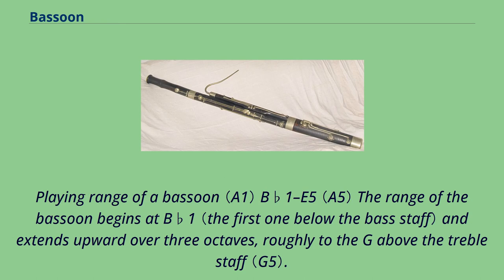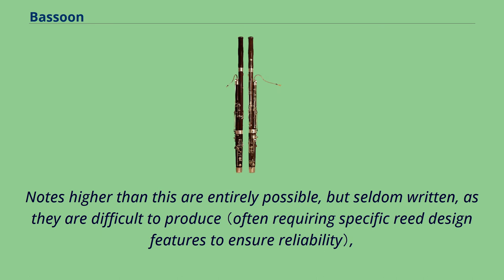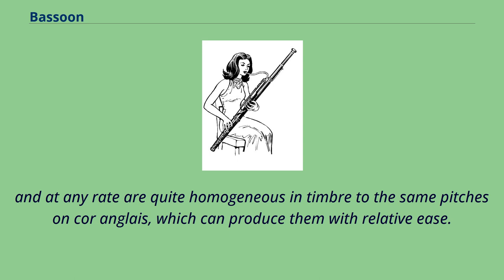The range of the bassoon begins at Bb1 and extends upward over three octaves, roughly to the G above the treble staff. However, most writing for bassoon rarely calls for notes above C5 or D5; even Stravinsky's opening solo in the Rite of Spring only ascends to D5. Notes higher than this are entirely possible, but seldom written, as they are difficult to produce, and are quite homogeneous in timbre to the same pitches on cor anglais, which can produce them with relative ease.